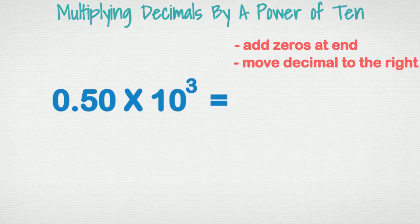0.50 times ten cubed. Remember, when multiplying a whole number by a power of ten, we added the zeros and we were done. Well, we can still do that, but there's one more step that needs to happen. So let's add some zeros after the five.